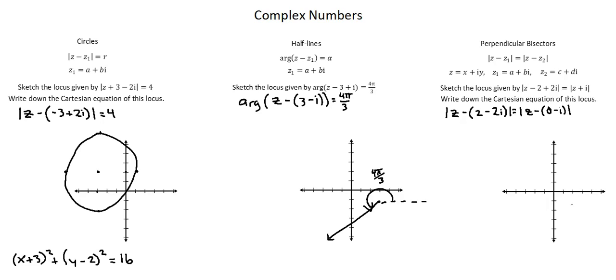z1 is 2 minus 2i and z2, zero minus i. I now want to identify the perpendicular bisector. So I'll start by finding the midpoint.